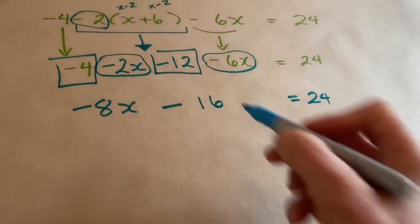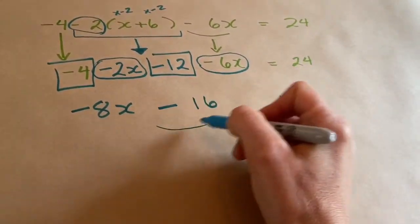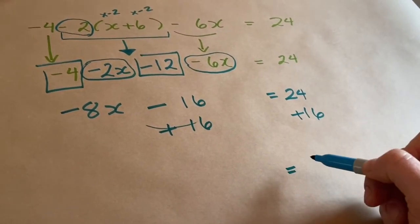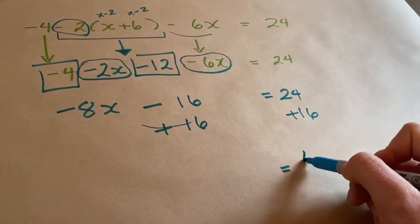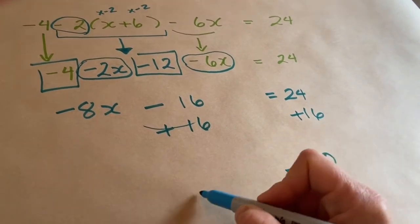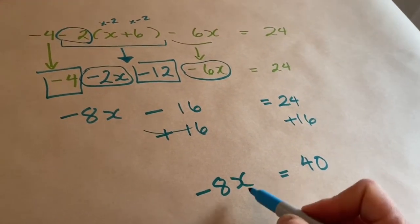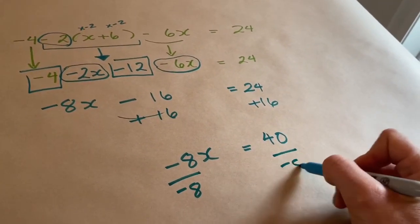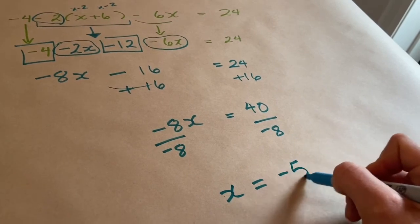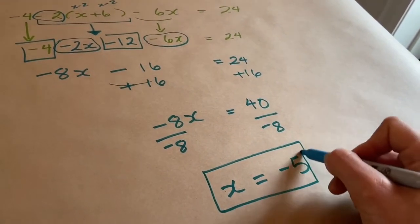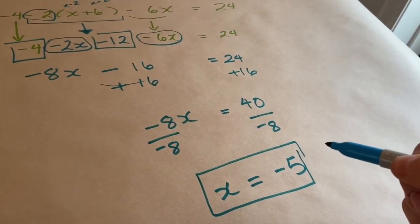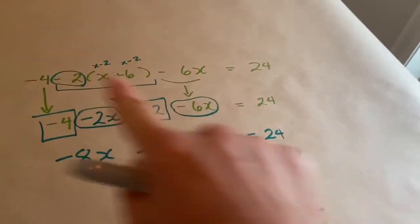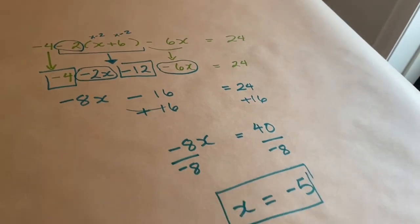And then we just have algebra. So instead of subtracting 16, I want to add 16, and that's going to give me 40. And then here I have minus 8x, so I need to lastly divide by minus 8, and x would equal minus 5. Just like we did before, you could take the time now and put the minus 5 here and there and check to make sure that you actually do get 24.